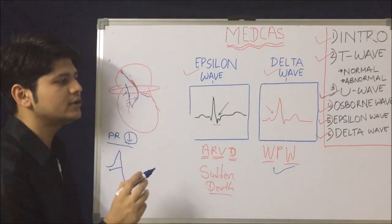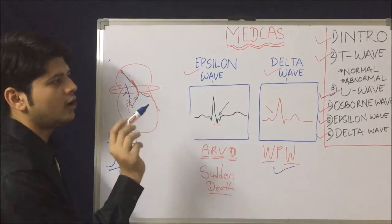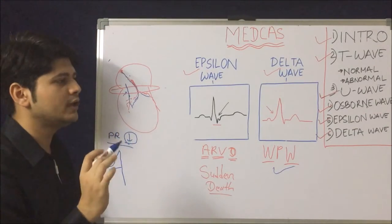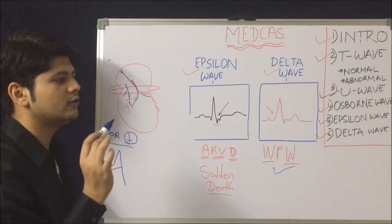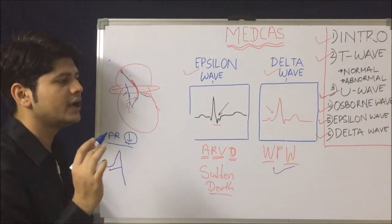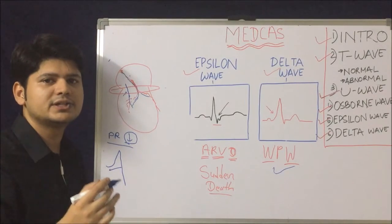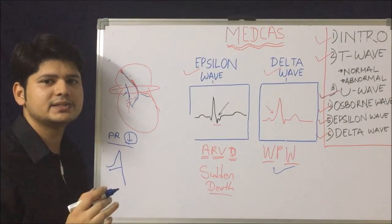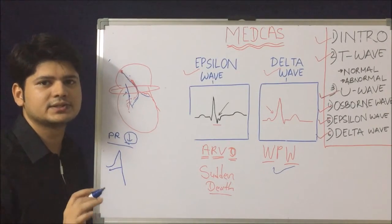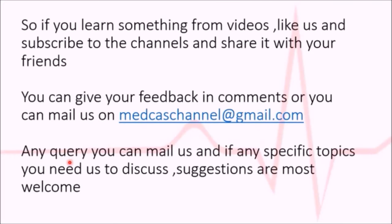So we have understood about all the waves: T wave, U wave, epsilon wave, Osborne wave, and delta wave. Next, we will look at real-time ECG examples to understand how these findings help in clinical practice. If you are learning something from our videos, please subscribe to our channel and like our videos. You can suggest improvements in the comments — we will try to improve further. Thank you.